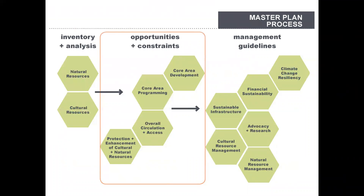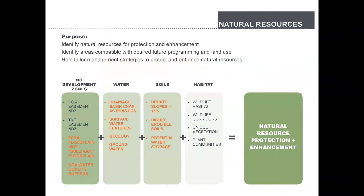Some of the key process questions were: where do we build, where do we not build, where do we limit certain types of use, where should we concentrate impervious surfaces? Understanding how the land works really relies on first understanding where the high-quality natural resources are — the high-quality habitat, the soils that need to be protected, the water bodies connected to groundwater systems. Then things like new development zones enforced by the city, and the conservation easements we have. How do all these things add up to tell us where the best places are to build, protect, or restore things?